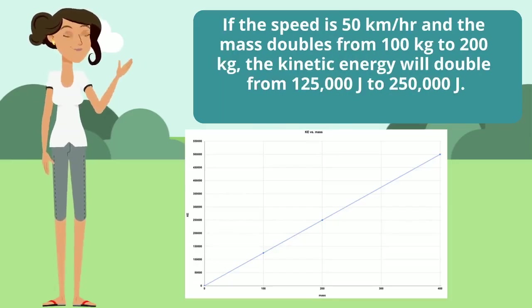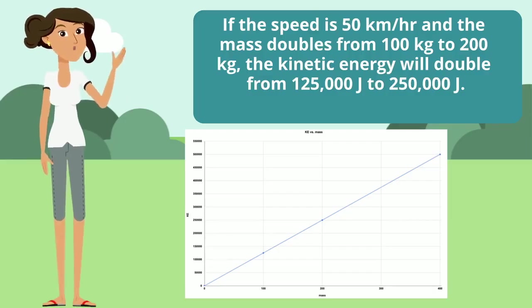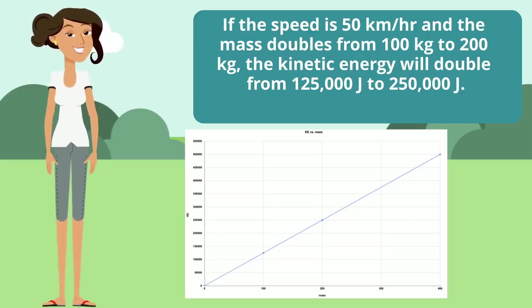So if the speed is 50 kilometers per hour, and the mass doubles from 100 kilograms to 200 kilograms, the kinetic energy will also double from 125,000 joules to 250,000 joules.